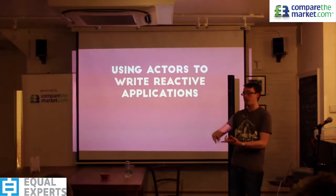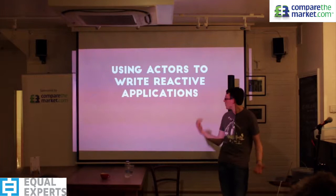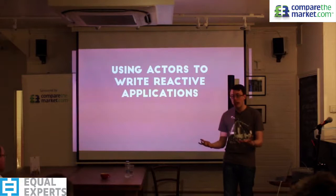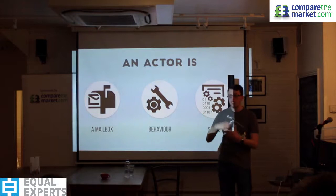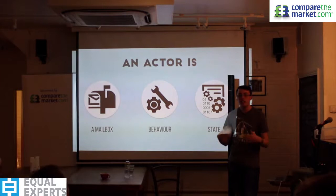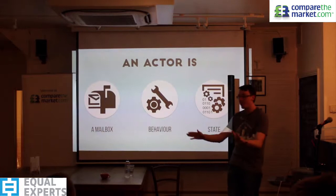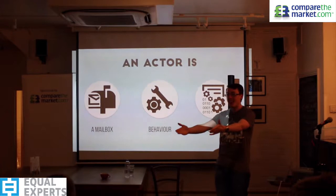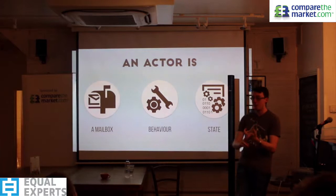We've said we want responsive applications and that actors help us distribute work more evenly — so we can use actors to write reactive applications. An actor has three key components: a mailbox (something we can communicate with), a behavior (something that works on received messages), and some state (something internal). We can think of actors like people. What's your name? Matt. Matt has state in the form of knowledge and memories.